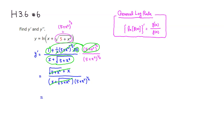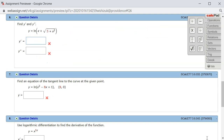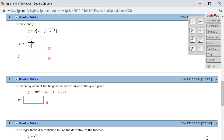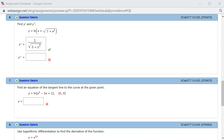So y prime equals 1 over the square root of (5 plus x squared). Let's check that answer. It came back and looks like we got the first derivative correctly.